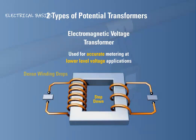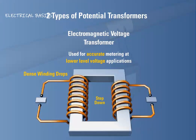Electromagnetic voltage transformers have dense winding designs to accurately scale down the voltage and ensure the ratio is consistent for all variations in the input voltage. Due to the small amount of voltage drops per winding, electromagnetic voltage transformers increase in size as the rated primary voltage increases. Likewise, the cost of electromagnetic voltage transformers tends to increase at a disproportionate rate to the primary voltage rating.